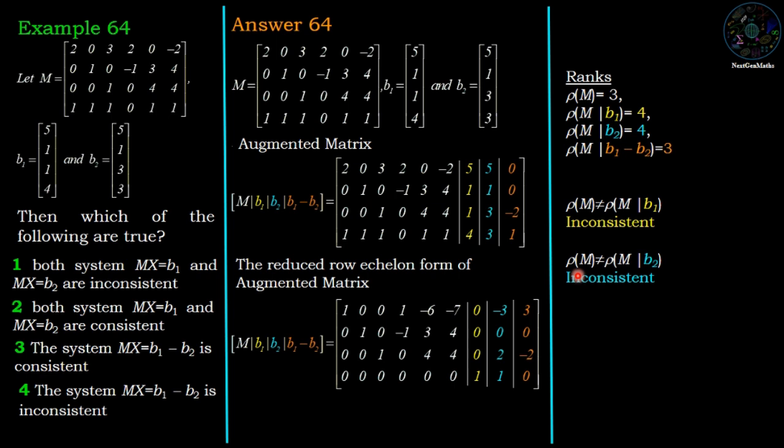Now rank of M not equal to rank of augmented matrix M with B2, therefore the system MX equals B2 is also inconsistent.